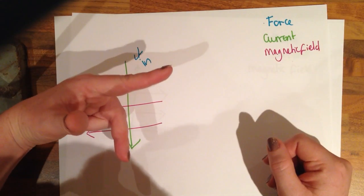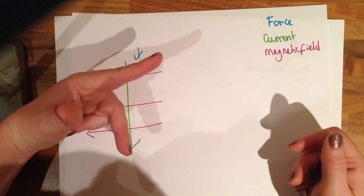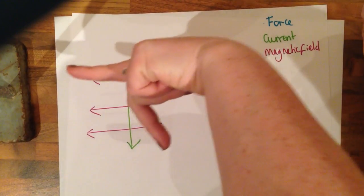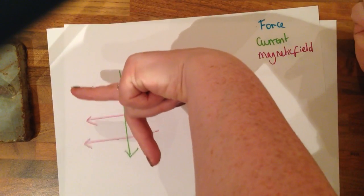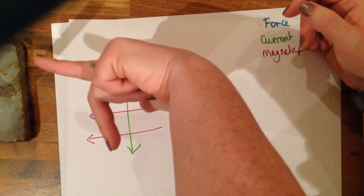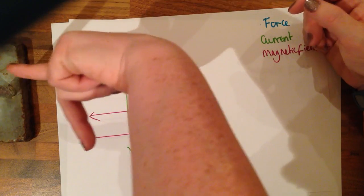For this example, I need to do a bit of contortion because my magnetic field is going in this direction, my current is going downwards and then my thumb is going into the paper.